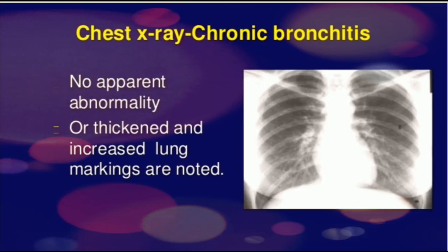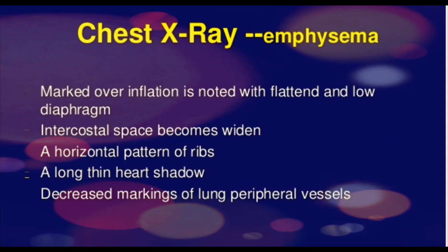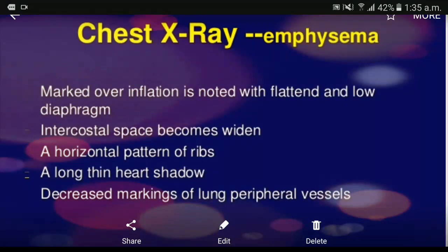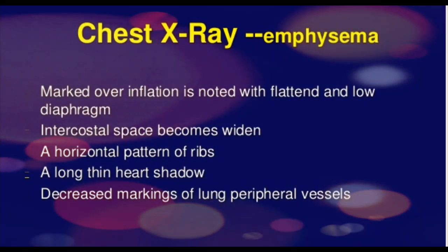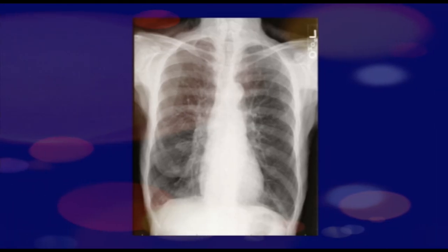Chest X-ray of chronic bronchitis normally appears normal or sometimes shows thickened and increased lung markings. In emphysema, chest X-ray shows marked overinflation, a low diaphragm, wider intercostal spaces, a horizontal rib pattern, and a long thin heart shadow. On the diagram, pear-shaped lungs, a tubular elongated thin heart shadow, a flat diaphragm, and wide intercostal spaces can be appreciated.